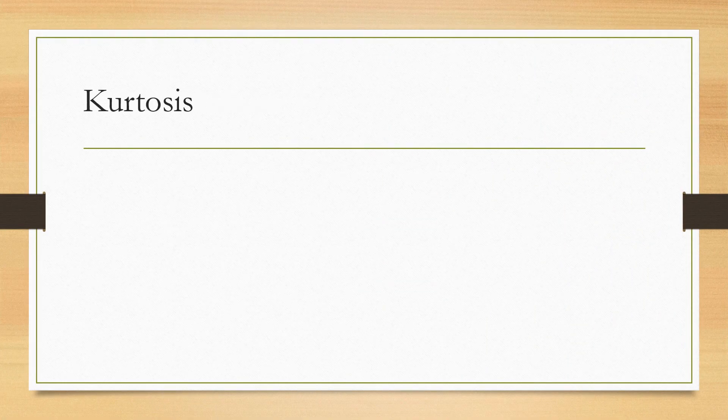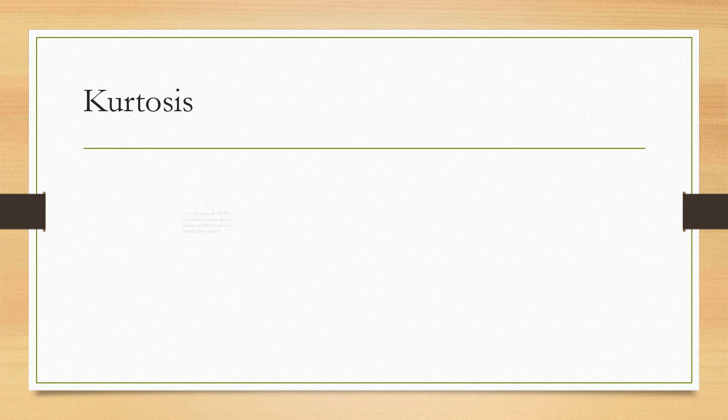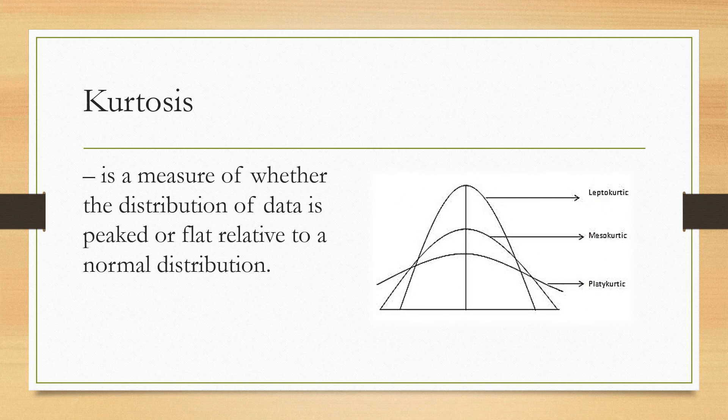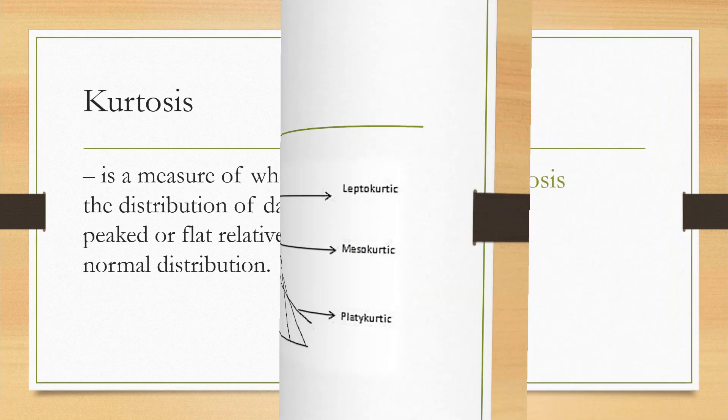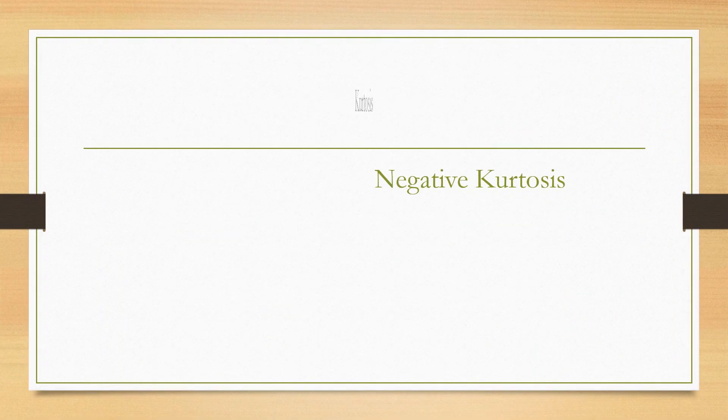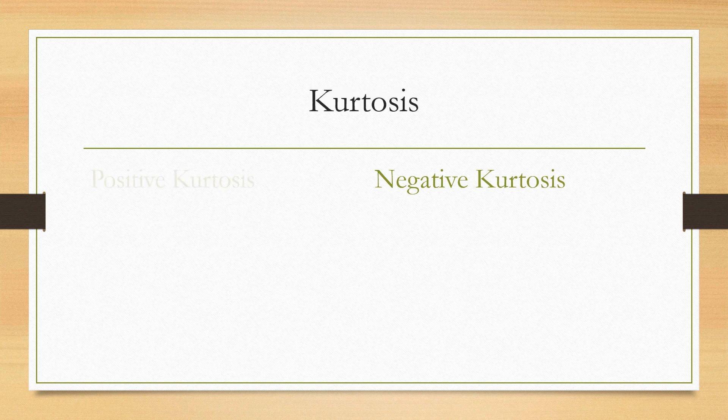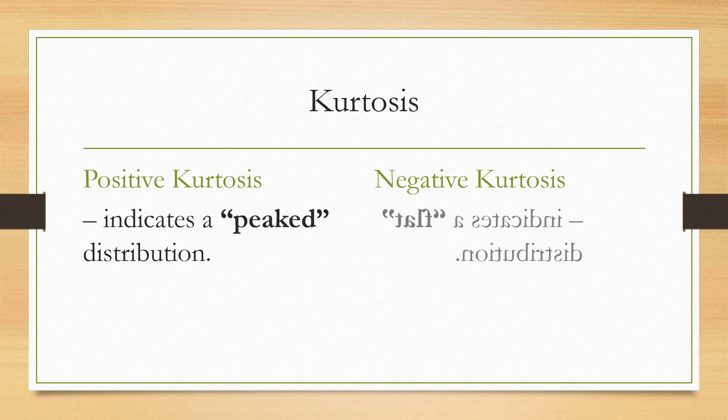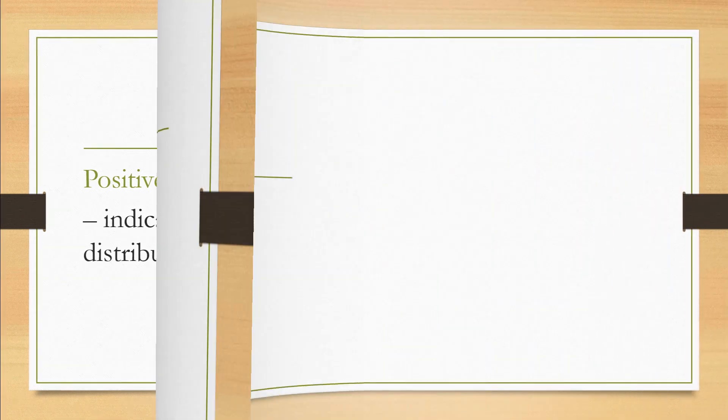Just like skewness, kurtosis, which is a measure of whether the distribution of data is peaked or flat relative to a normal distribution, has positive and negative too. Positive kurtosis indicates a peaked distribution, while negative kurtosis indicates a flat distribution.